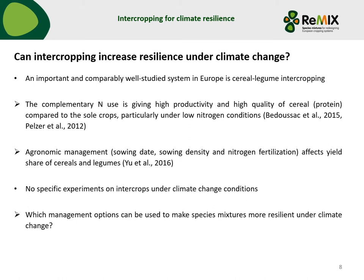There are many different intercropping systems, species, temporal and spatial arrangements, but here we decided to focus on cereal-legume intercropping. This is an important and comparably well-studied system in Europe. In this system, especially the complementary nitrogen use gives high productivity and also high quality of the cereal, meaning a higher protein concentration in the grain compared to the sole crop, particularly under low nitrogen conditions. There are also studies and meta-analyses showing that agronomic management — for example sowing date, sowing density, or nitrogen fertilization — can affect the yield share of cereals and legumes, meaning we can economically influence the interaction between these crops. However, it has to be stated that there are no specific experiments on intercrops under climate change conditions.